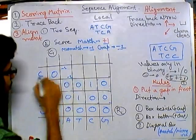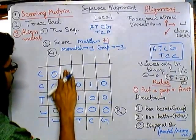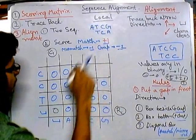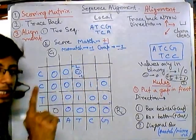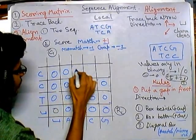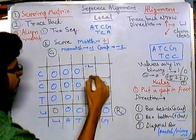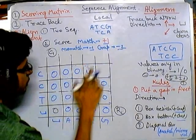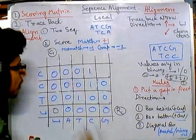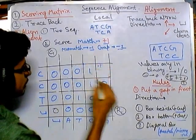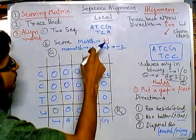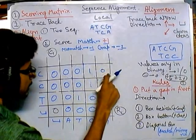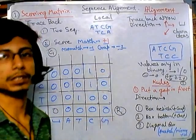Last row: 0 − 2 = −2, C vs A is a mismatch so −1, place 0. Then: 0 − 2 = −2, C vs T is a mismatch, highest value is −1 negative, place 0. Then: 0 − 2 = −2, 1 − 2 = −1, but C vs C is a match giving +1 — highest value is +1, positive, so place 1. Last box: 1 − 2 = −1, 0 − 2 = −2, C vs G mismatch gives 1 − 1 = 0. The highest value is 0, so we place 0.